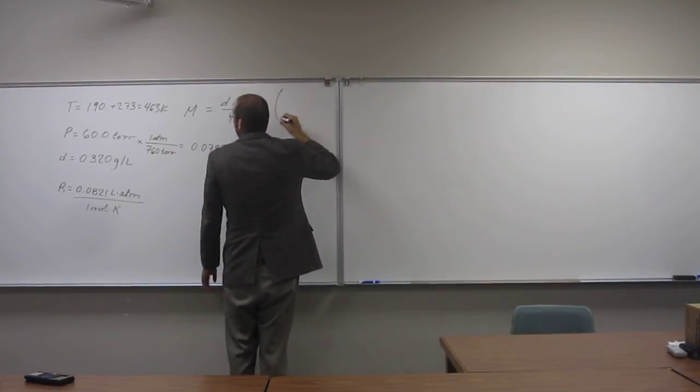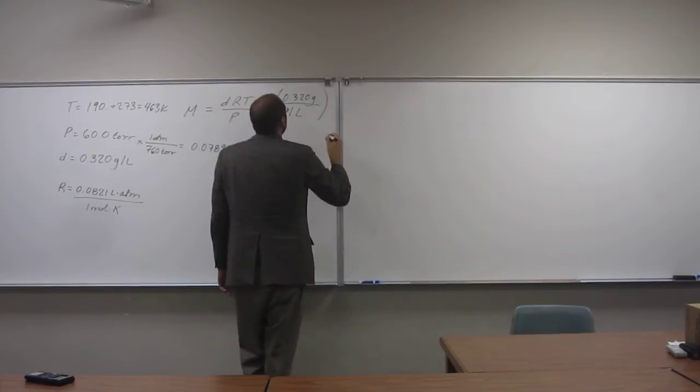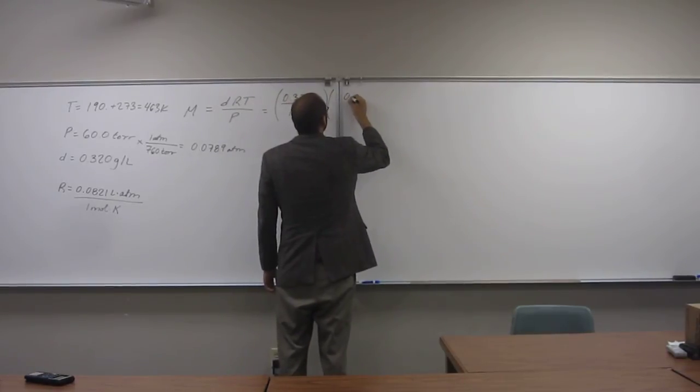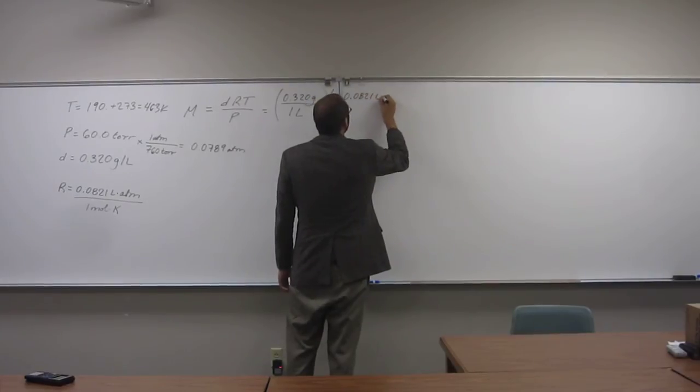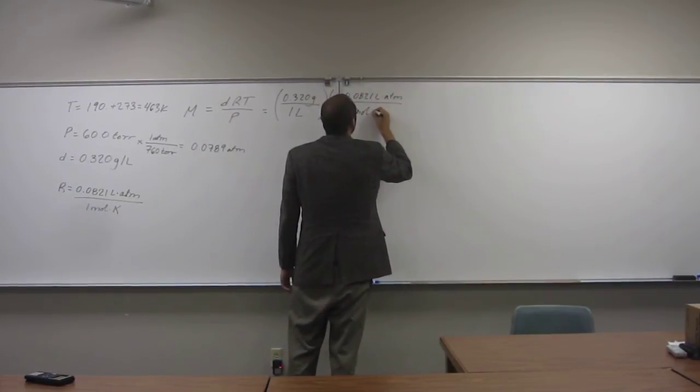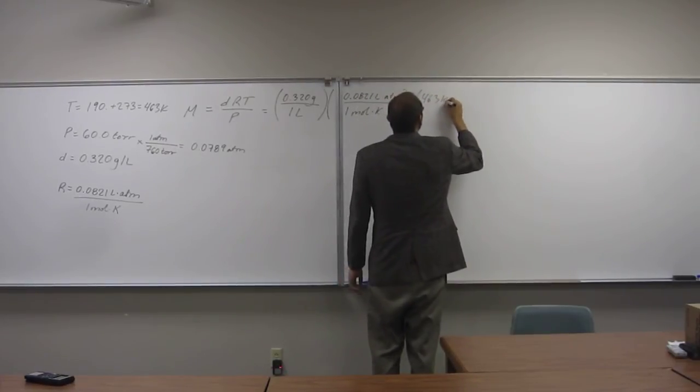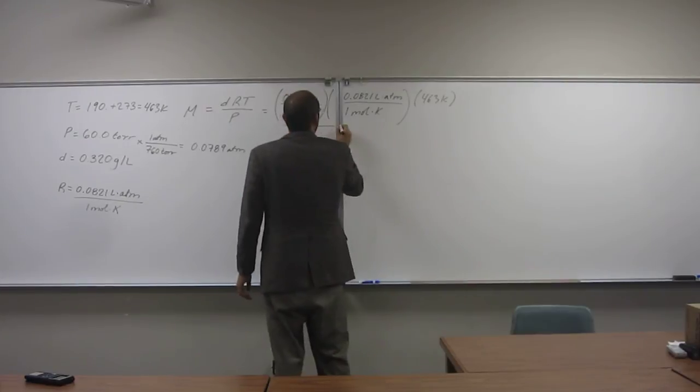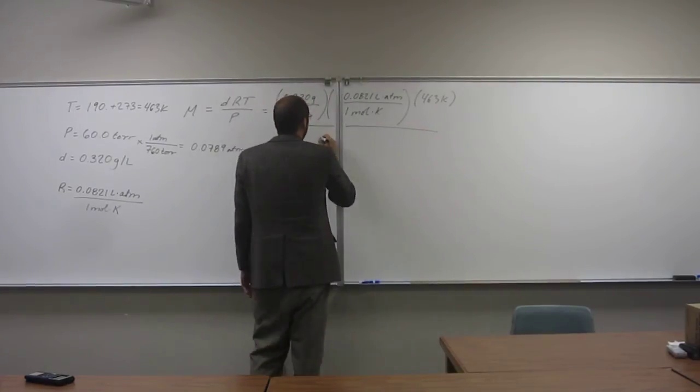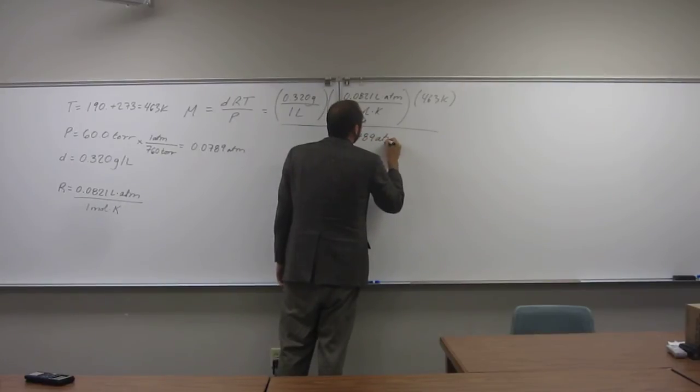So density, 0.320 grams per one liter times R, 0.0821 liter atm per one mole Kelvin. So that's 463 Kelvin times 463 Kelvin. Divide all of that by the pressure, 0.789 atm. Okay.